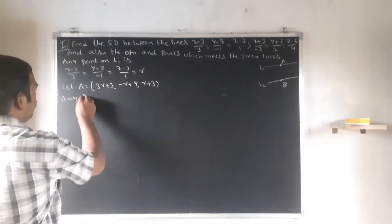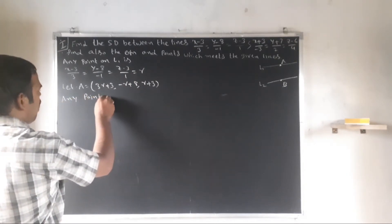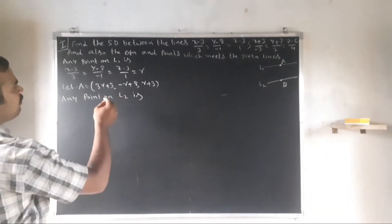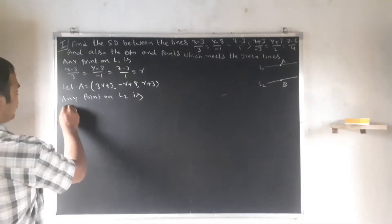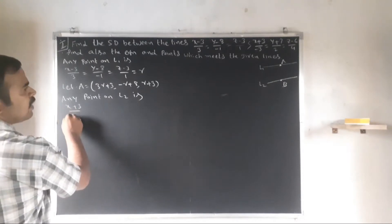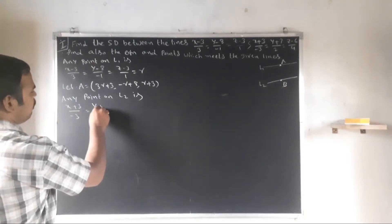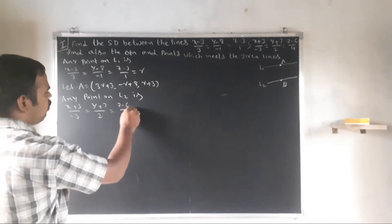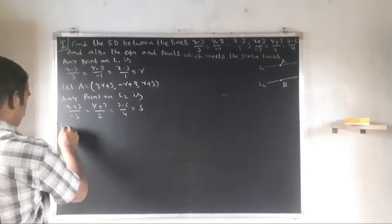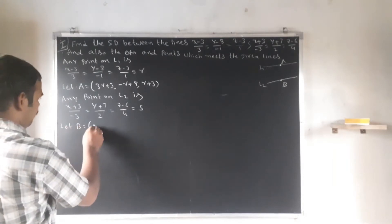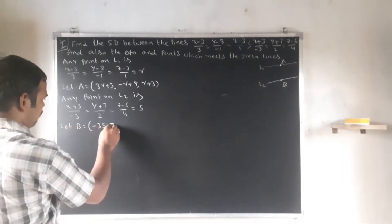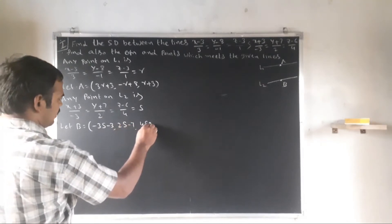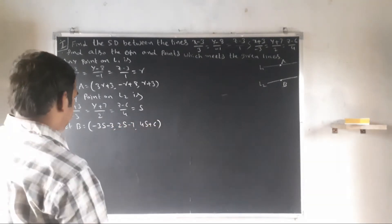Any point on L2: (x + 3)/(-3) = (y + 7)/2 = (z - 6)/4 = S. Let B = (-3S - 3, 2S - 7, 4S + 6).